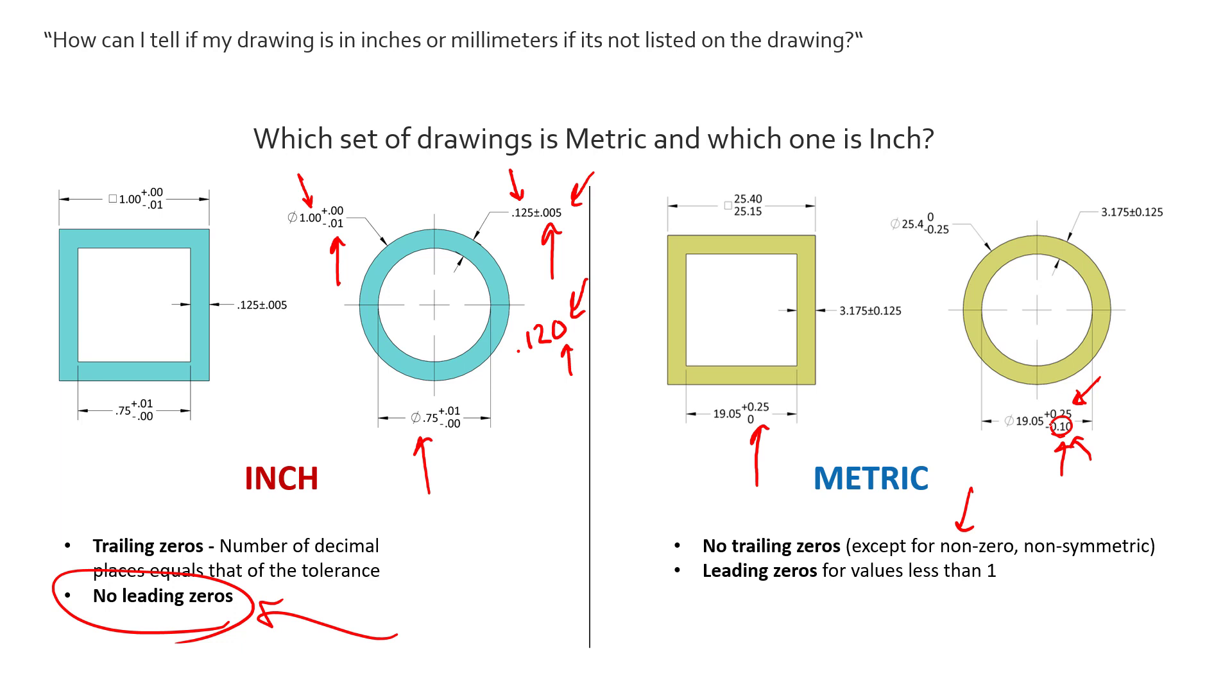Now you'll notice for dimensions here that are less than one we have to add leading zeros. So we have a tolerance that's 0.25 millimeters. We add a zero to show 0.25.